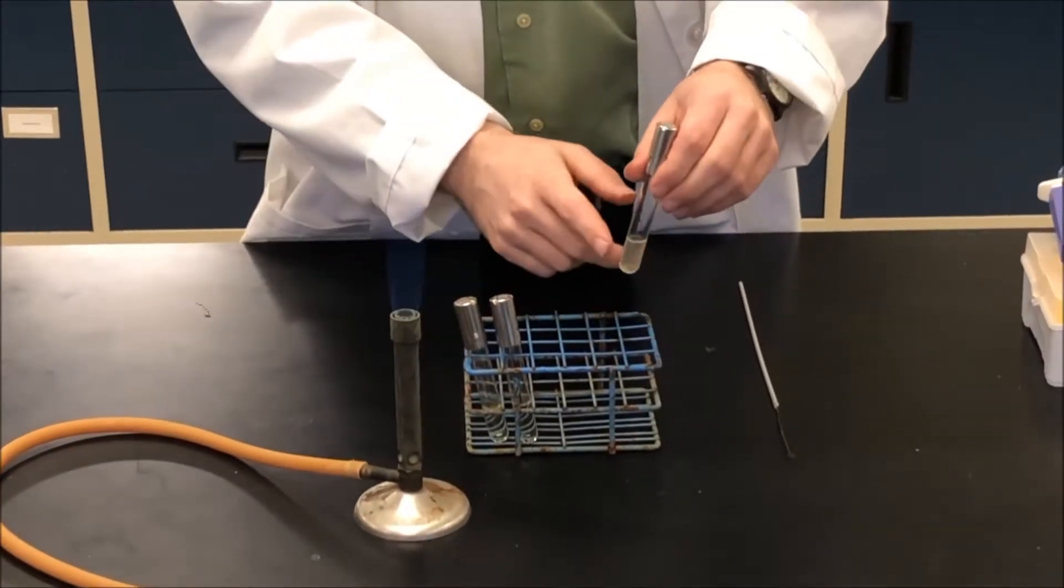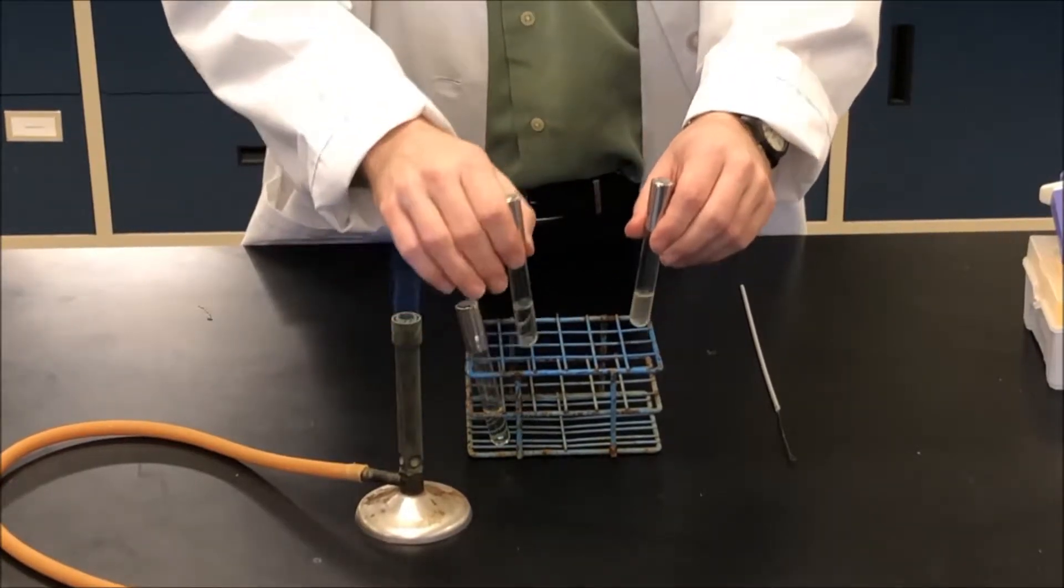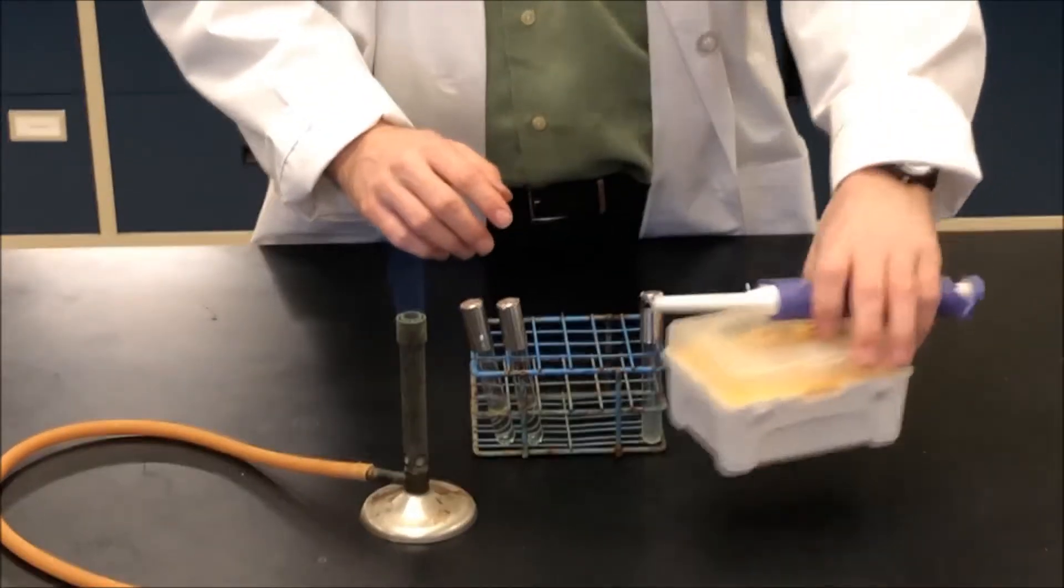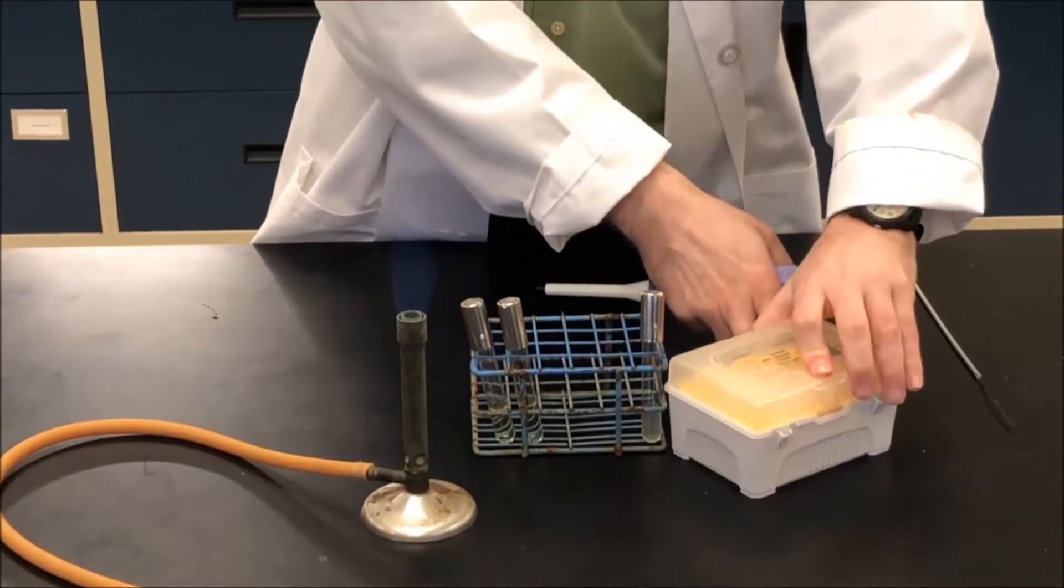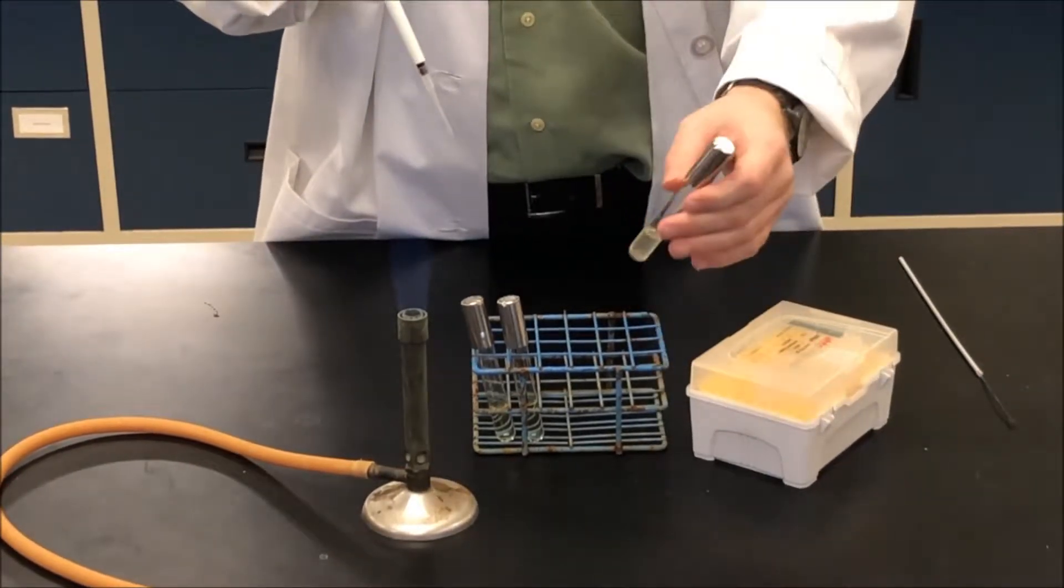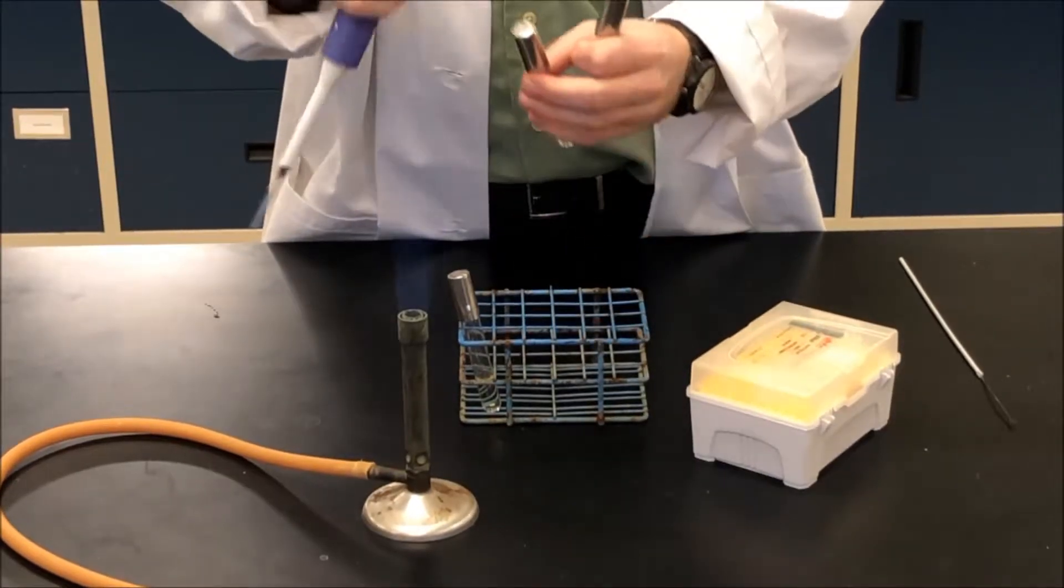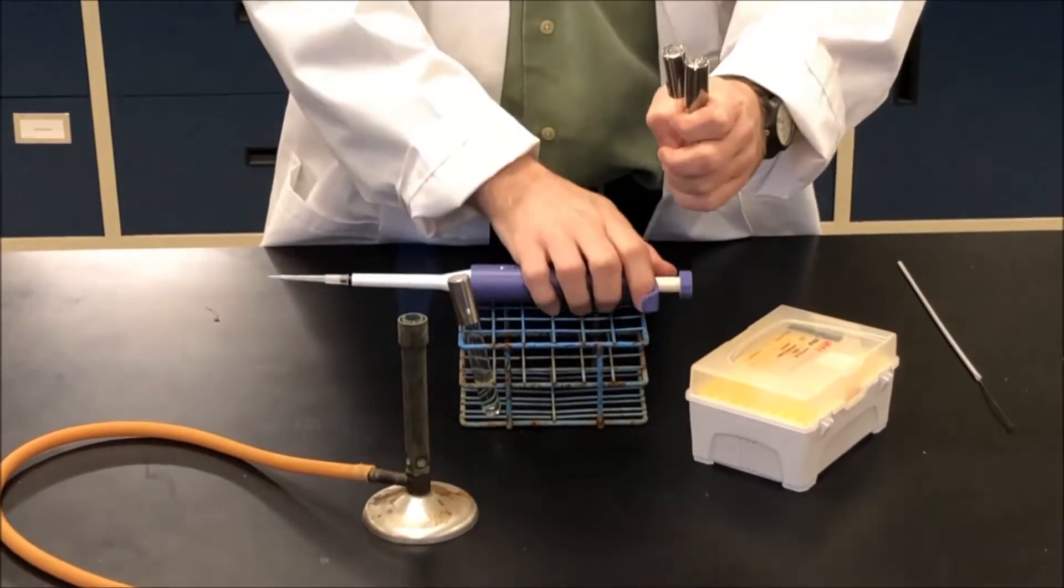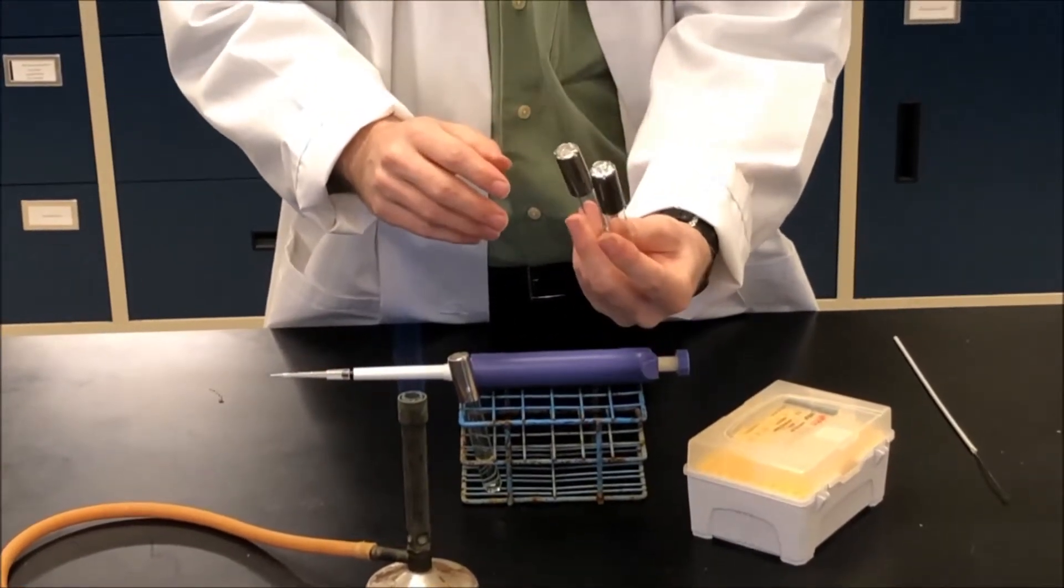Now there are two ways that I can transfer some of this liquid culture into my sterile media. One way is by using a micropipetter. So I can take a tip as such. I take my tube of bacteria and I take my sterile tube. I'm going to hold them like this, both tubes.